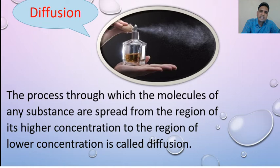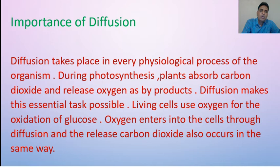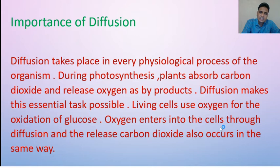Now my students, what are the importance of diffusion? Diffusion takes place in every physiological process of an organism. During photosynthesis, plants absorb carbon dioxide and release oxygen as by-products — diffusion makes this essential task possible. Living cells use oxygen for the oxidation of glucose. Oxygen enters into the cells through diffusion and the release of carbon dioxide also occurs in the same way.